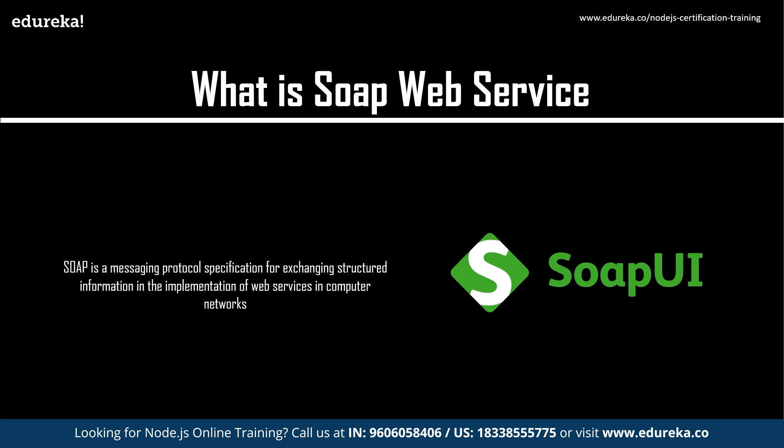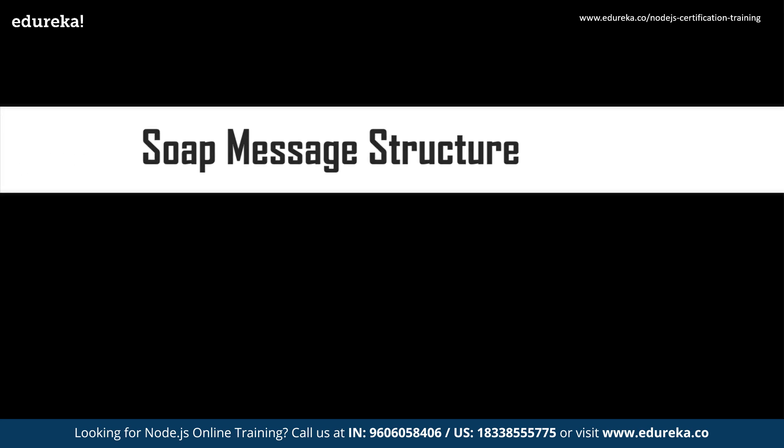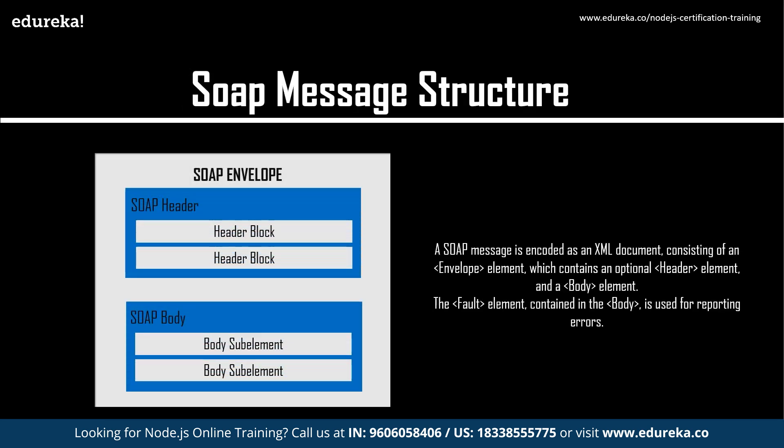Now let's look at the SOAP message structure. A SOAP message is encoded as an XML document consisting of an envelope element, which contains an optional header element and a mandatory body element. There is also a fault element contained in the body element, used for reporting errors. The SOAP envelope is the root element in every SOAP message. The SOAP header passes application-related information processed by SOAP nodes along the message path. The SOAP body contains information for the ultimate recipient, and the SOAP fault is used for reporting errors.